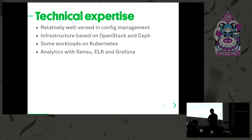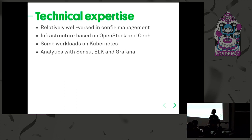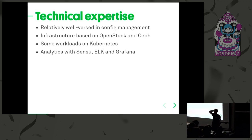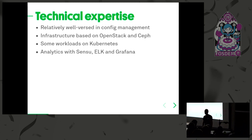At the start of the project we already had quite a bit of technical expertise in house — an IT department of 30 to 35 people with operators, developers, and support. The operators were relatively well-versed in config management already. We used Puppet and Foreman specifically for deploying web services with infrastructure based on OpenStack and Ceph, done some experiments on Kubernetes, and we have analytics based on Sensu, the ELK Stack, and Grafana.